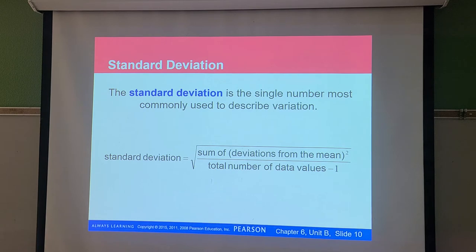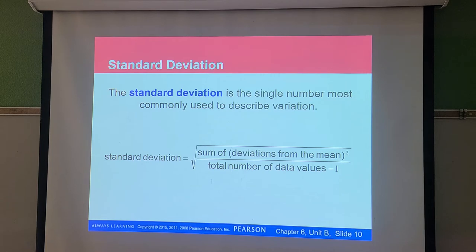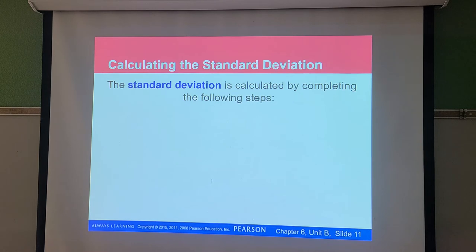The standard deviation formula equals the square root of the sum of the deviations from the mean squared, divided by the total number of data values minus 1. That denominator is called degrees of freedom. The calculation looks straightforward, but getting to the sum of the squared deviations is the part that takes a lot of work. We'll walk through the process so you can learn to do it, and it's important to know in case you don't have your TI calculator on a test or quiz.